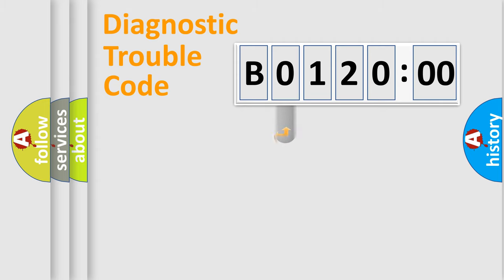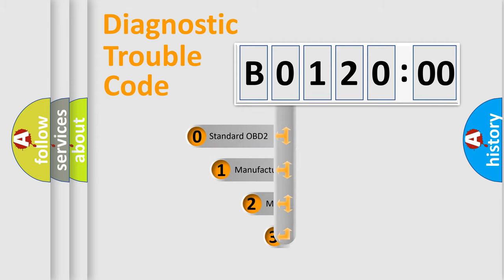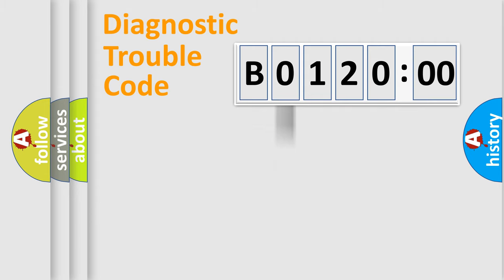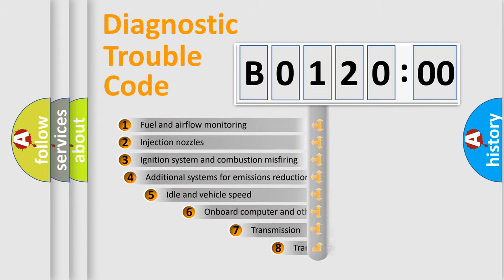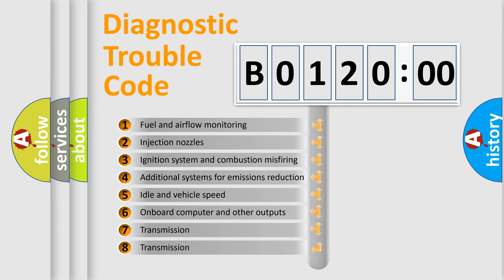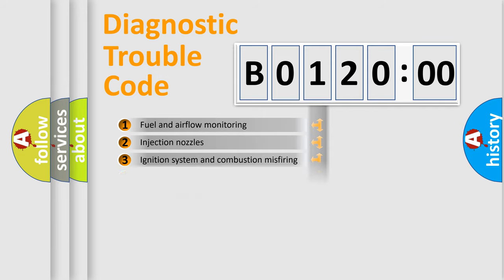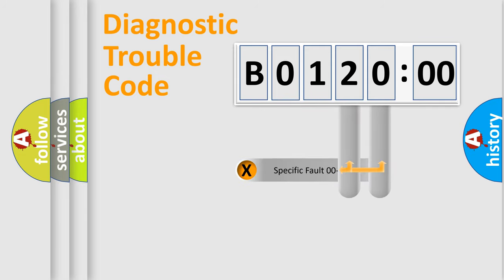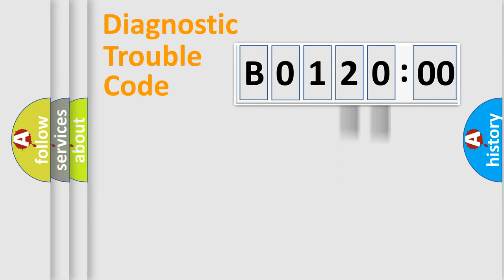This distribution is defined in the first character of the code. If the second character is expressed as zero, it is a standardized error. In the case of numbers 1, 2, or 3, it is a more specific expression of a car-specific error. The third character specifies a subset of errors. The distribution shown is valid only for the standardized DTC code. Only the last two characters define the specific fault of the group.